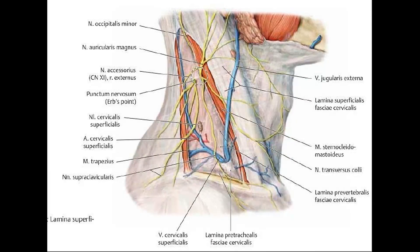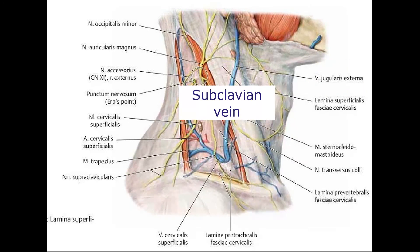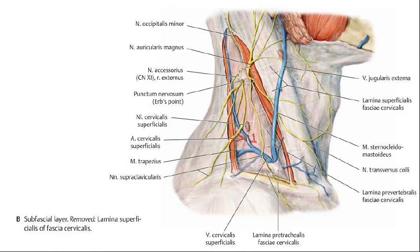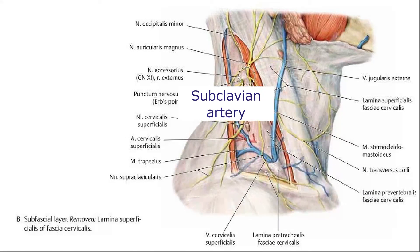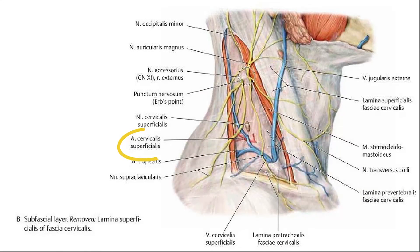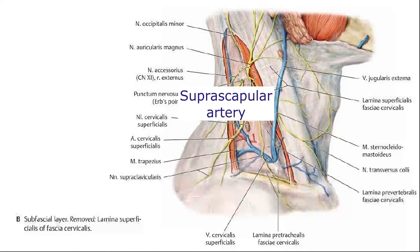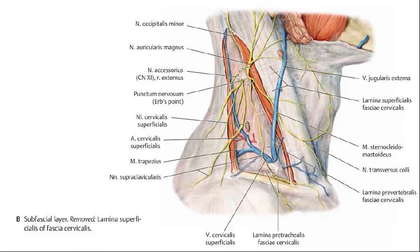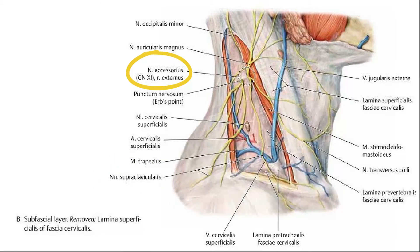Now, on to the contents. Remember nine ANS. For the V, we have the external jugular vein and the subclavian vein — two veins. For the arteries, we've got the subclavian artery, superficial cervical artery, suprascapular artery, and the occipital artery — four arteries, so that's six in total. And we've got three nerves: the brachial plexus, the spinal part of the accessory nerve, and the cervical plexus.